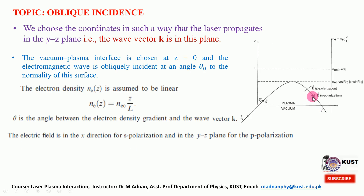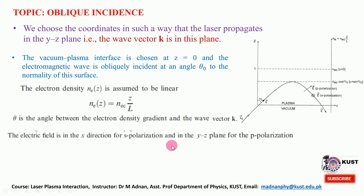If the electric field is at a right angle to the plane formed by y and z, the electric field is in the x direction — that is s-polarization. There is another possibility where the electric field is parallel to the plane formed by y and z, which gives p-polarization. In the next two lectures we will discuss linearly polarized lasers with s and p polarization and how the propagation characteristics in inhomogeneous plasma — including the cutoffs and reflection points — change.